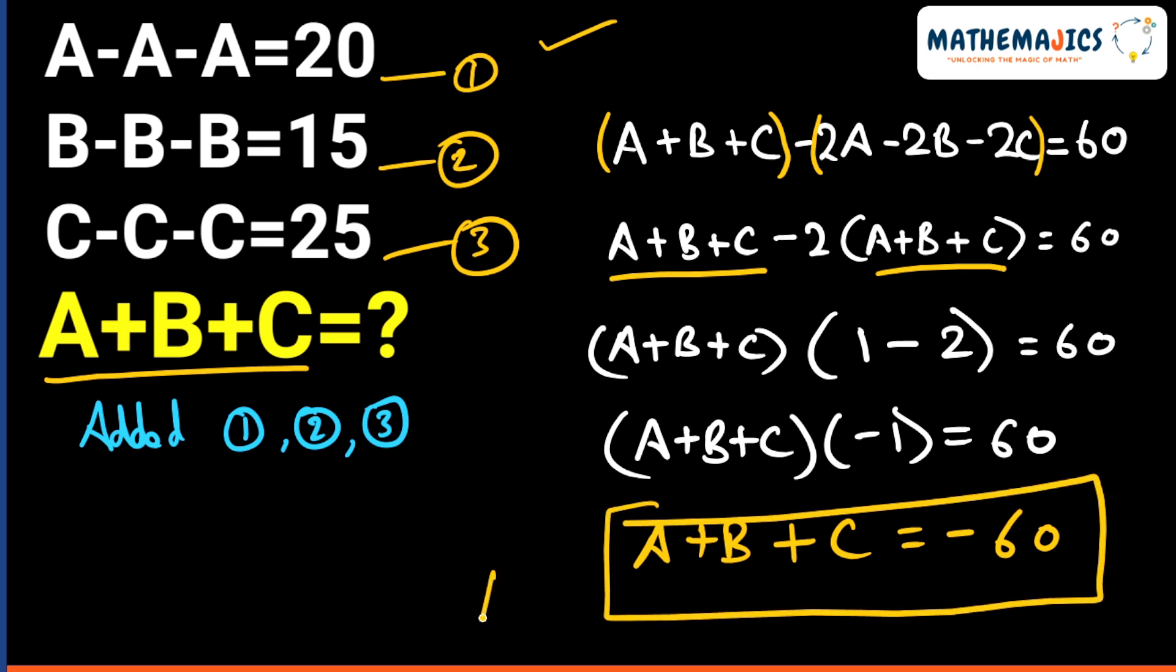So our final answer, sum of A plus B plus C is negative 60.